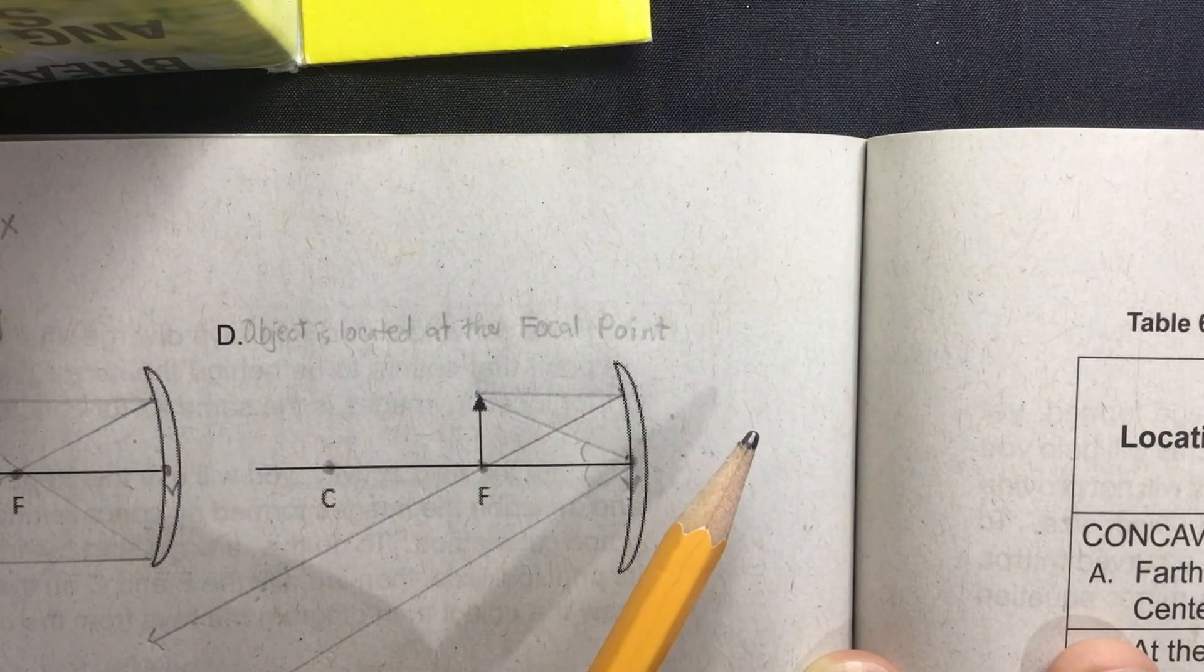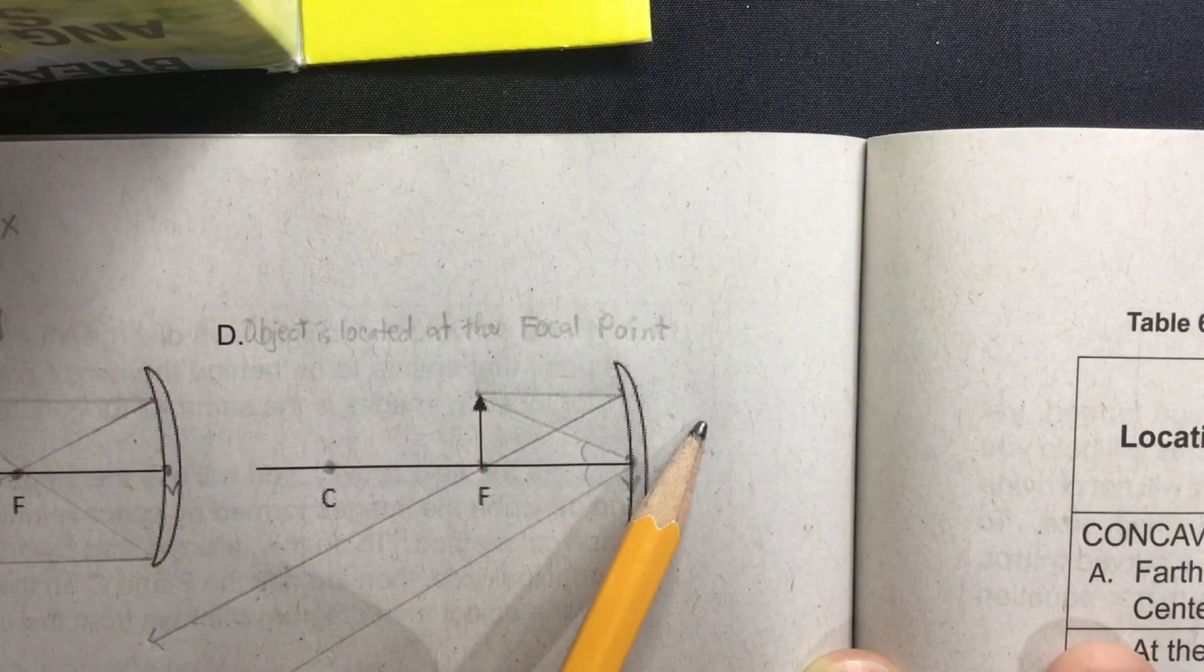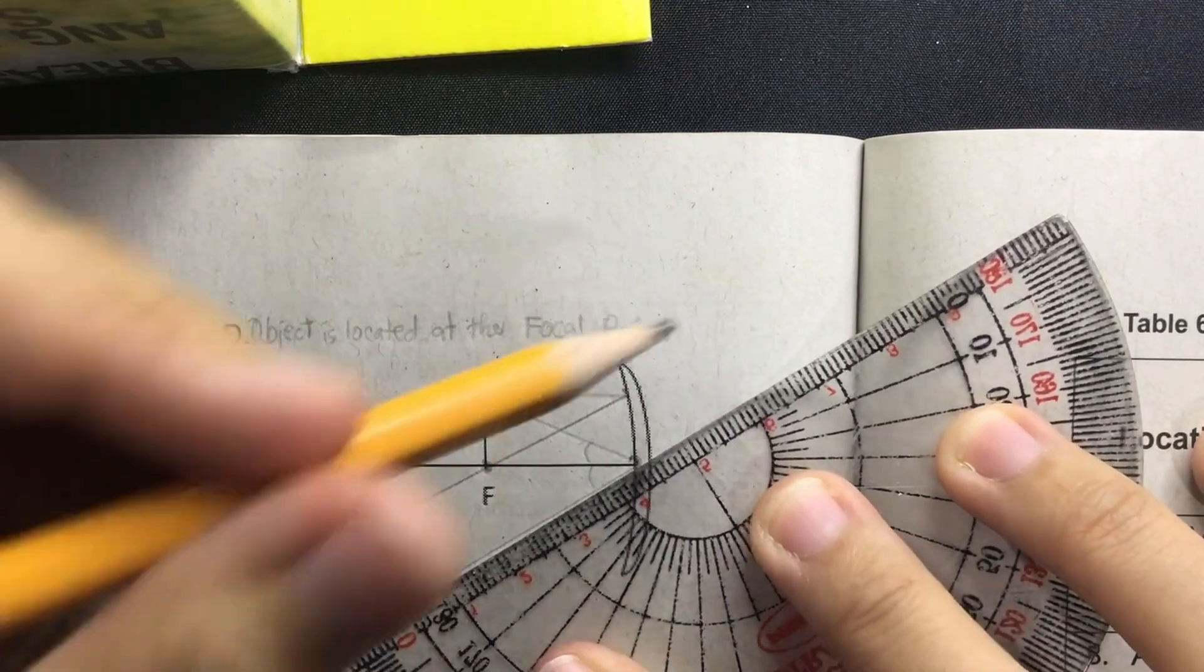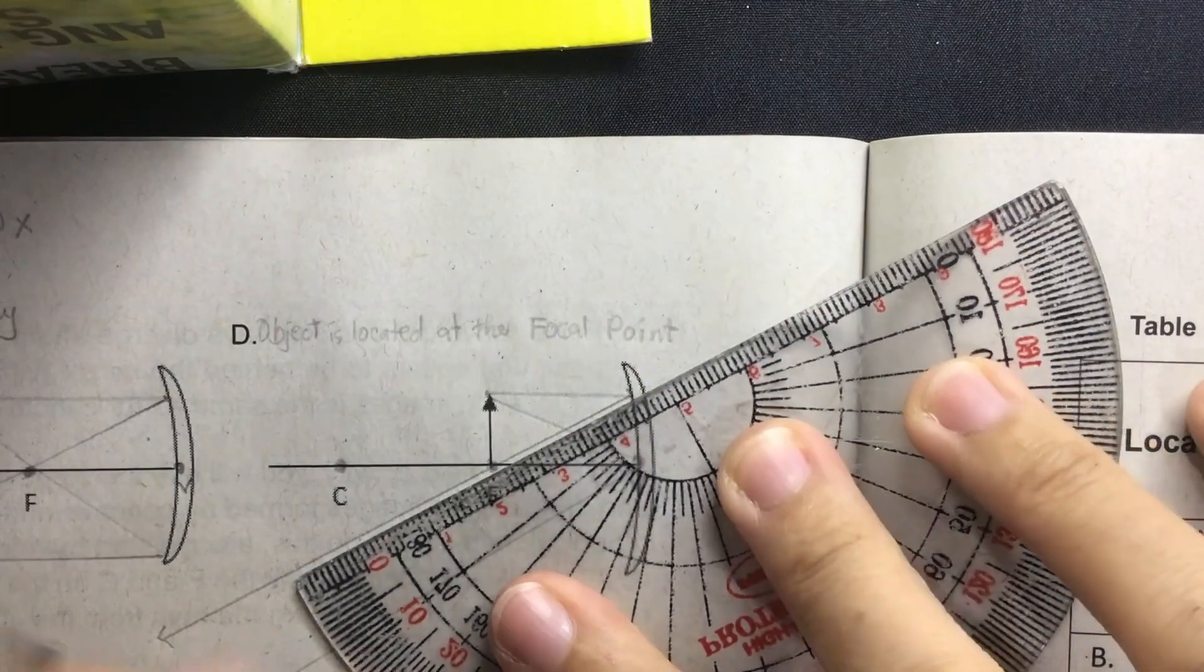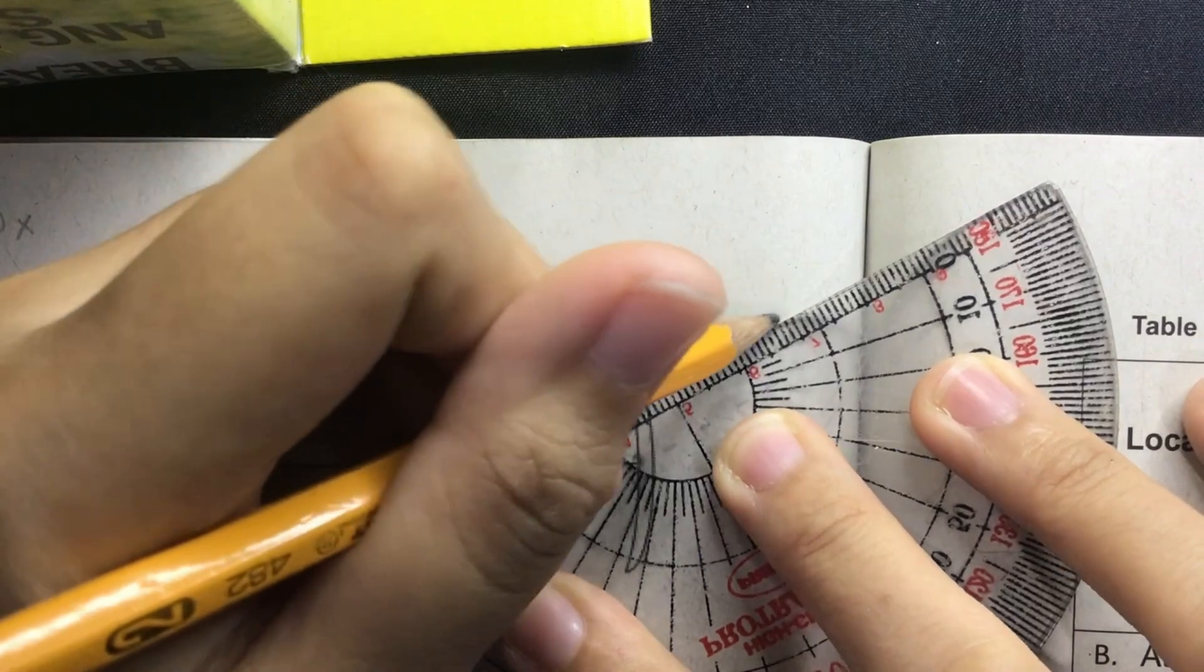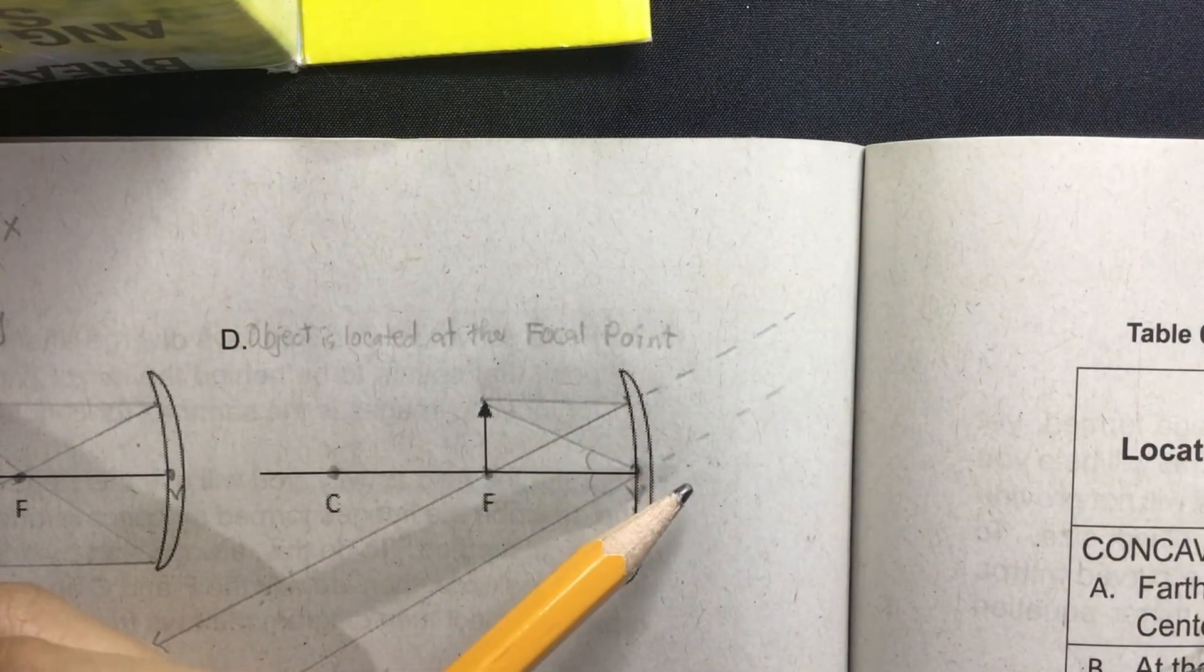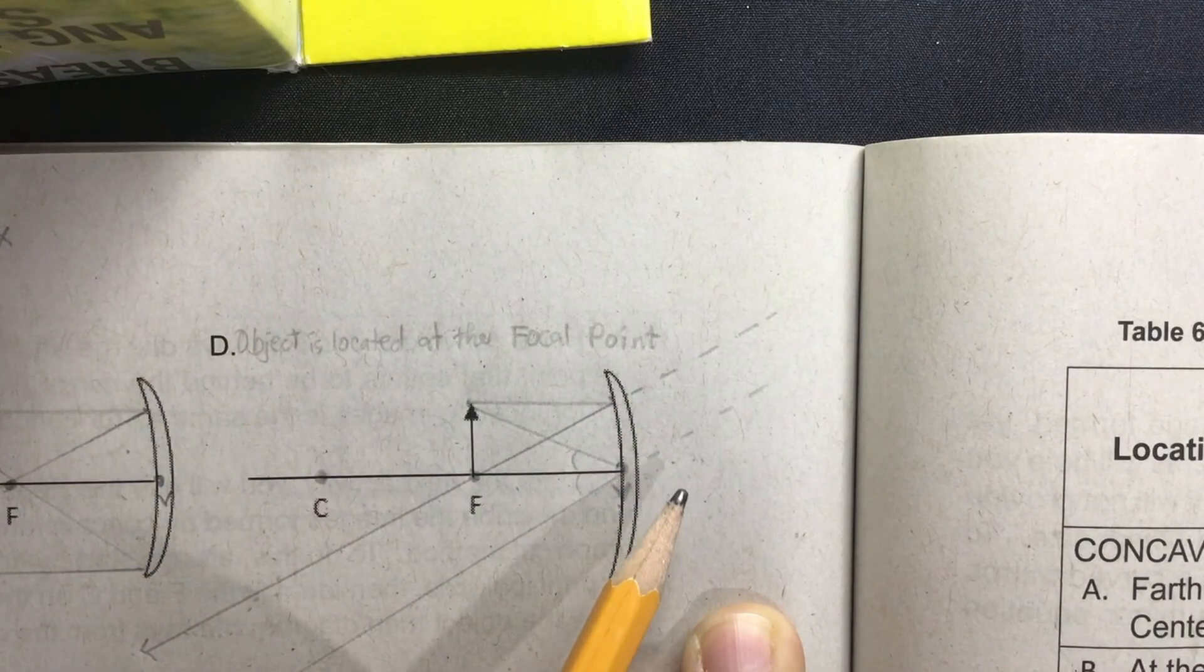So let's find out by extending the reflected rays at the back of the mirror. Well, this one is also a reflected ray that we need to extend. We use broken lines to draw the virtual rays. Now, did the virtual rays intersect at the back of the mirror? No, they did not intersect.